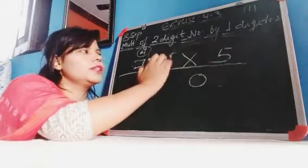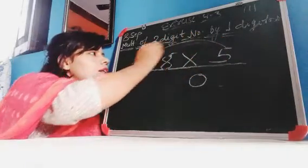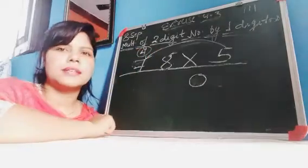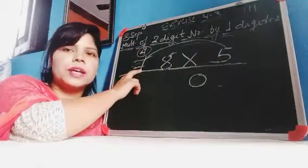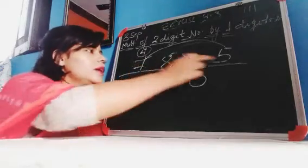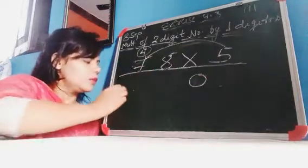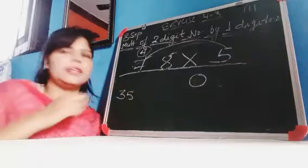Then after the multiplying this number, we multiply this number. Understand, and then 5 times 7 is 35. What is the 5 times 7 is 35.